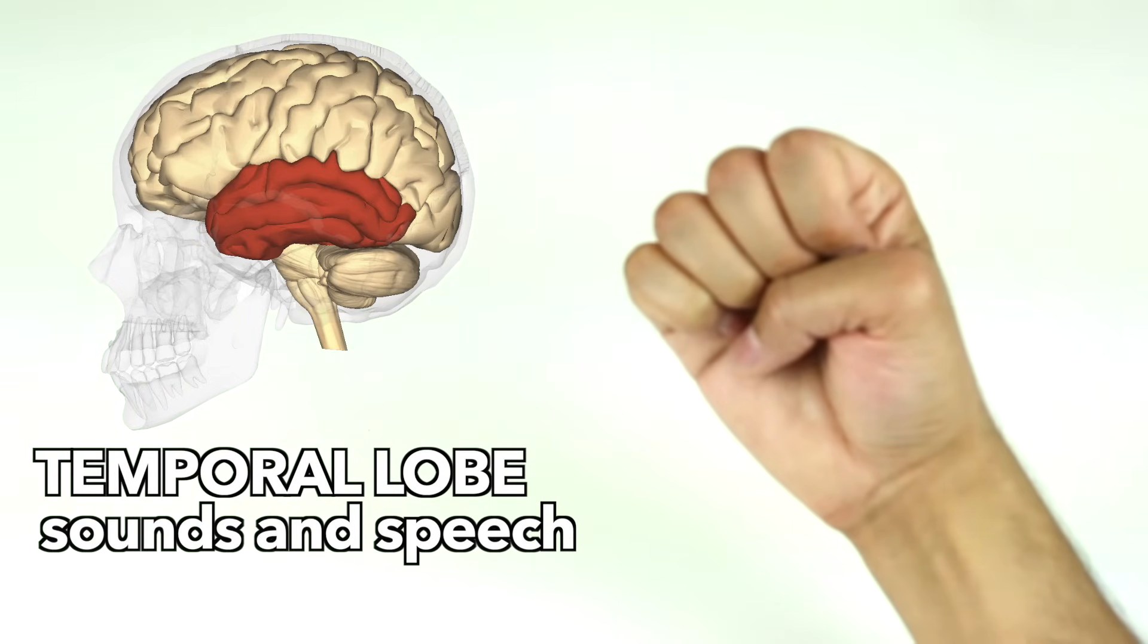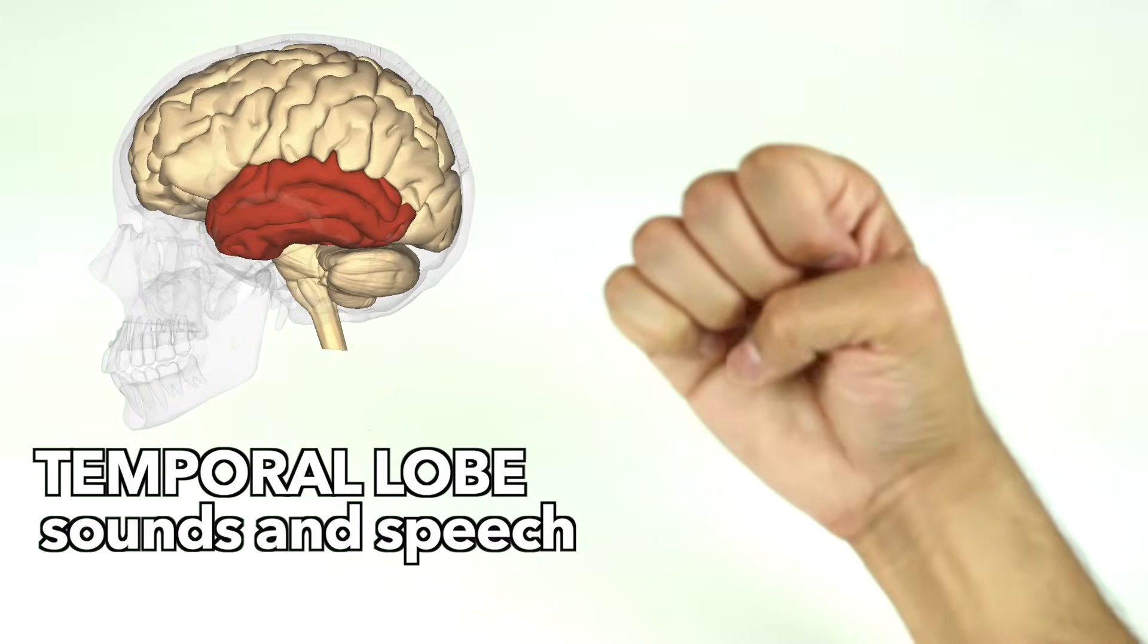Here's how I remember this. The thumb looks like a temporal lobe, which is important for talking.